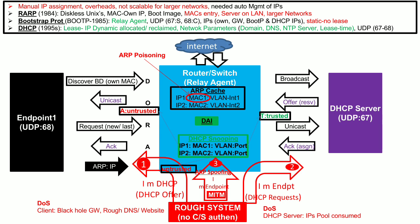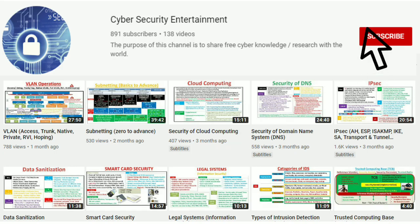The next protection is Dynamic ARP Inspection, which is linked to the DHCP snooping feature. If any endpoint forwards an ARP packet to update the ARP cache of the router, the router will first compare that ARP packet information with the information available in the DHCP snooping table. If there is a match, it allows the ARP packet to update the local ARP cache. This concludes the discussion — please stay connected to the channel for similar videos.